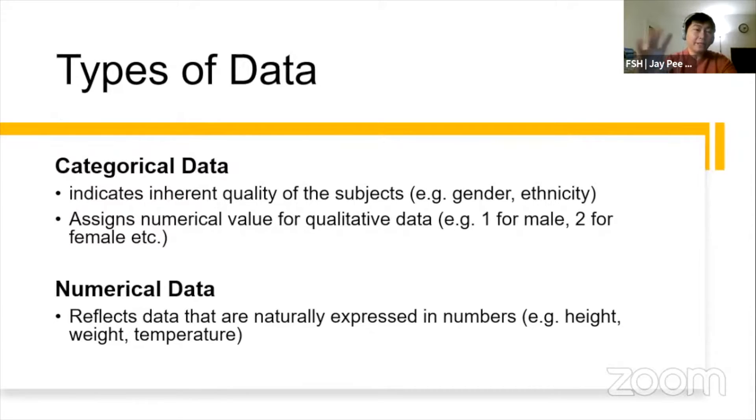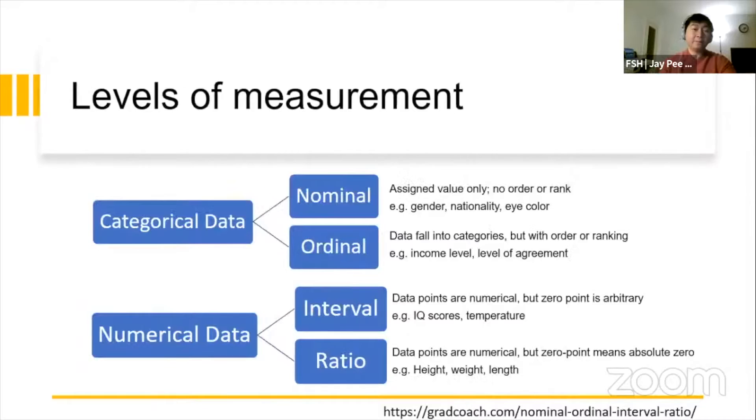But these two main types of data also have some levels, where the categorical data is divided into nominal and ordinal. So, the nominal type of categorical data has assigned values only. There's no order or rank. If you assign a number one for male or two for female, then it's just an assignment of value, there's no ranking or order in the data. It's just mere assignment of values.